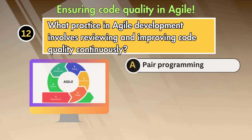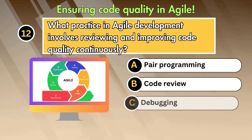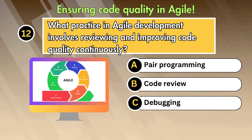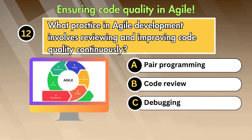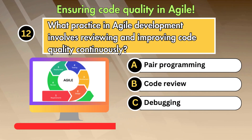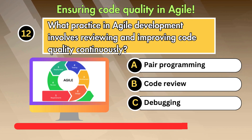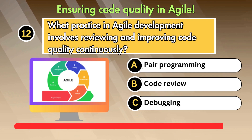What practice in agile development involves reviewing and improving code quality continuously? Option 1: Pair programming. Option 2: Code review. Option 3: Debugging.